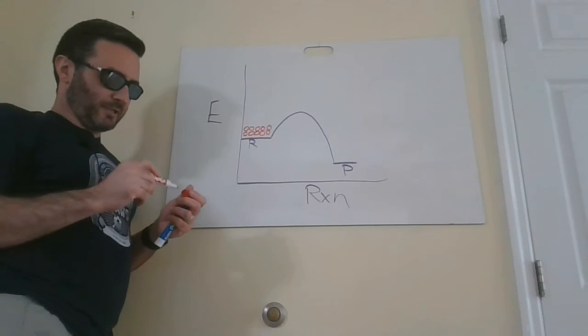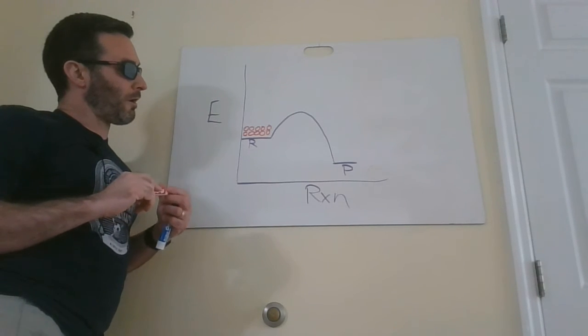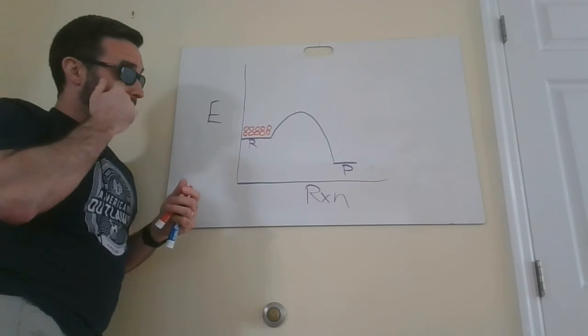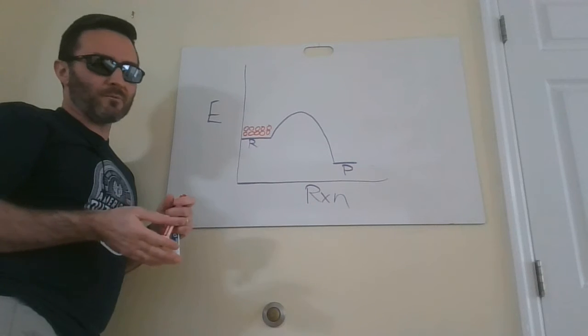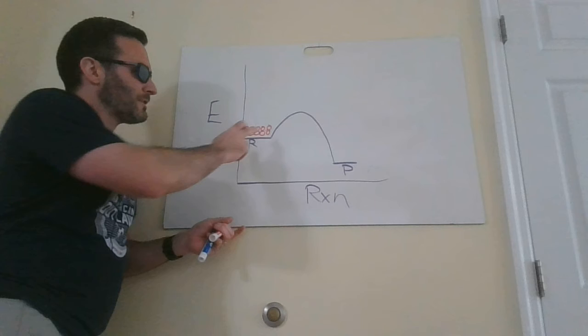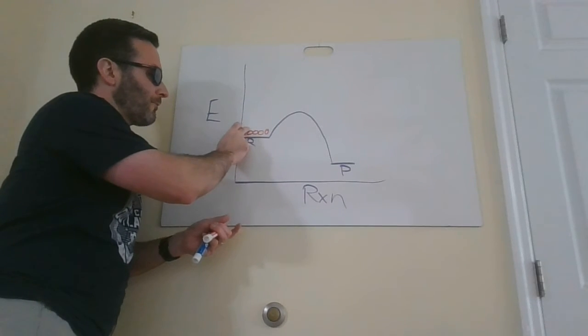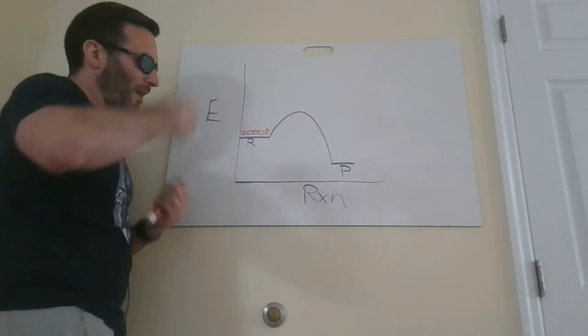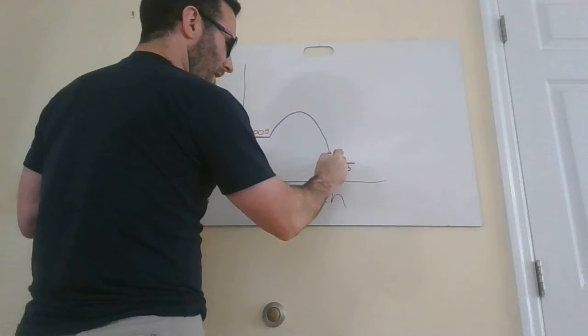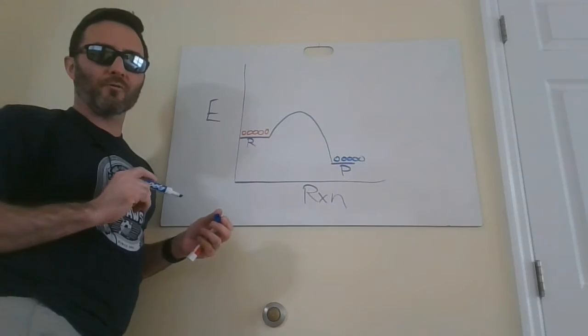So how hard is it going to be for the reactants to get over the hump? And the answer is not as hard. That's a smaller bump to get over. And so you could see a lot of these fly over at first, because it's not a lot of energy to get over. So let's put five. So maybe a whole lot go flying over.